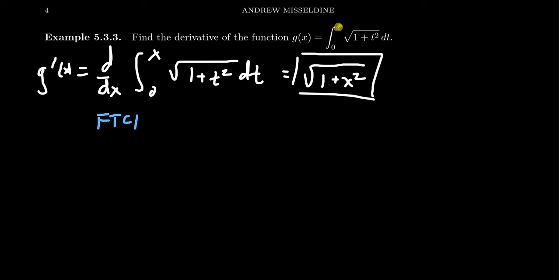The other thing you need is you need a variable at the very top. In this case, you see just an x. It needs to be a variable at the top and a constant at the bottom. If you take the derivative, then you'll just get back the function that we see right here.